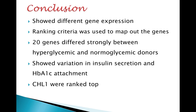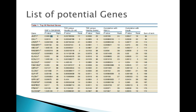Gene CHL1 was ranked the highest. The expression of this gene can be explained by its role in cell adhesion, helping glucose bind to hemoglobin A1C. Hence, it showed higher gene expression and higher correlation with hemoglobin A1C, and lower expression in islets from type 2 diabetes patients. Silencing CHL1 affects insulin secretion. On this slide, you can see the list of all 20 potential genes.